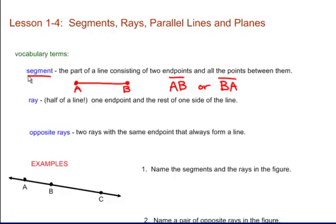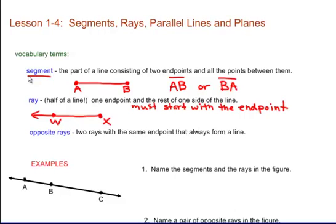A ray is like half of a line. It has one endpoint and the rest of one side of the line. So I start with one endpoint and I have one part of the line that continues on. I have a point right here, so I'm going to name it. I choose to name this point X. Now I'm going to need another point on this line in order to name it, so I choose this point — let's call this W. Now this is important when you name a ray: you must start with the endpoint.